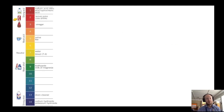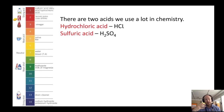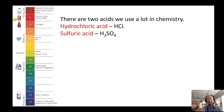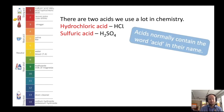Here you can see an example of the pH scale. There are two acids we use a lot in chemistry and you need to know their chemical formulas. The first is hydrochloric acid, which has the symbol HCl, and the second is sulfuric acid, which has the symbol H2SO4. You can normally tell if something is an acid because it will have the word 'acid' in its name.